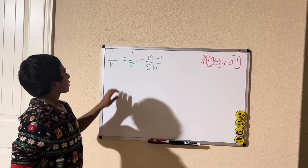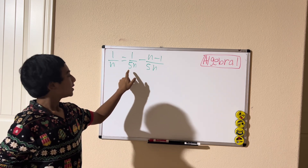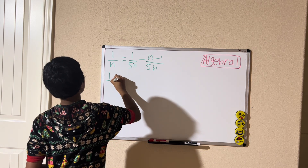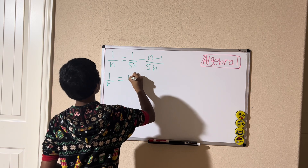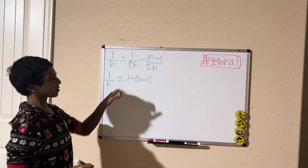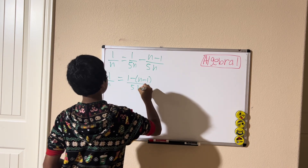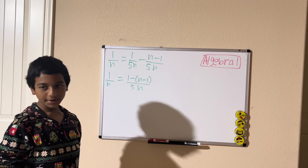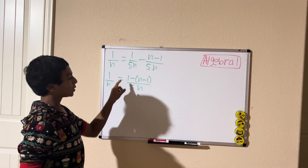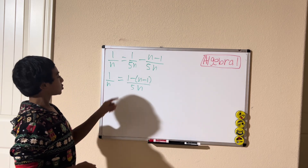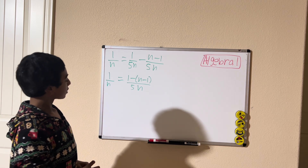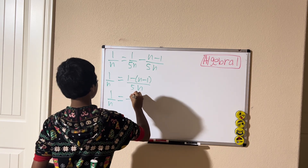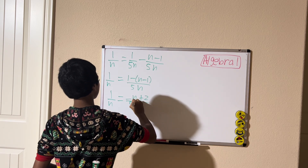Let's solve this. First we have to combine the denominators — they have the same monomial, so we're going to combine it. So 1 divided by n equals 1 minus (n minus 1) divided by 5m. Let's simplify the numerator: 1 minus n minus 1 — distributing the negative 1 — gives us negative n plus 2. So we have 1 divided by n equals negative n plus 2 all over 5m.